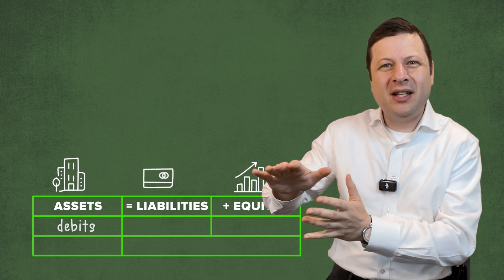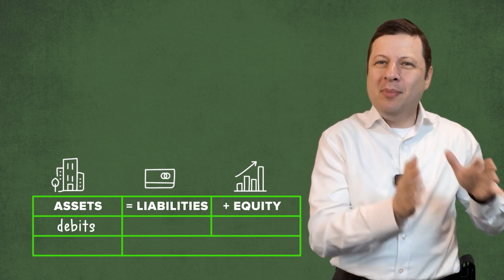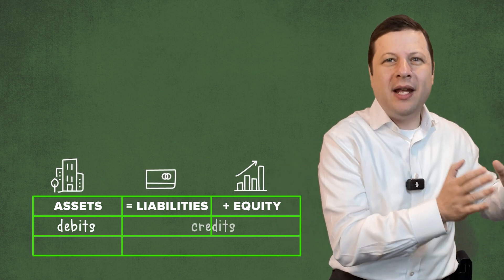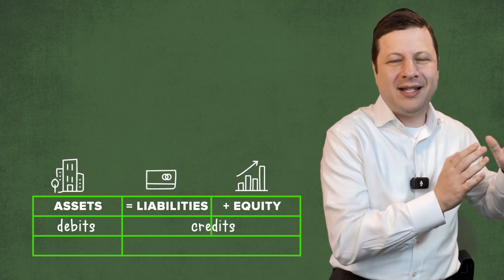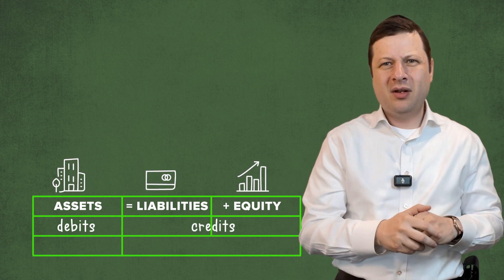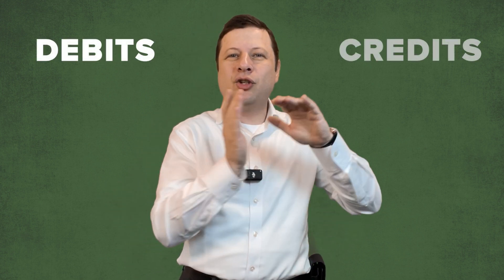Assets have debits on the left; liabilities and equity have credits on the right. Debits aren't bad and credits aren't good — debits are left and credits are right.